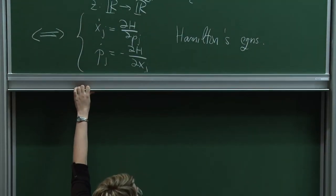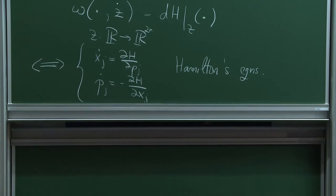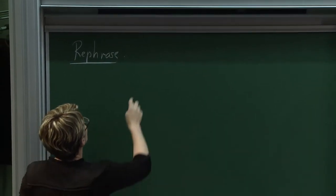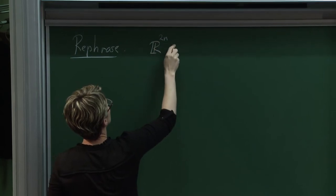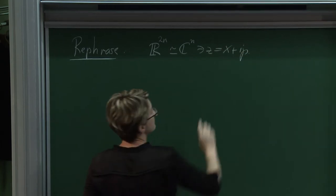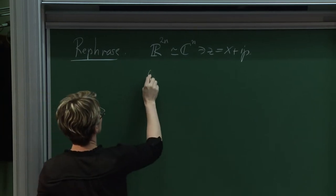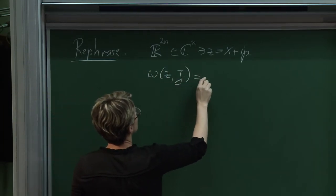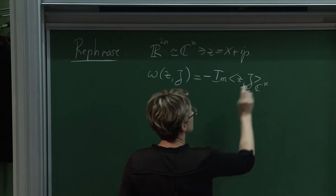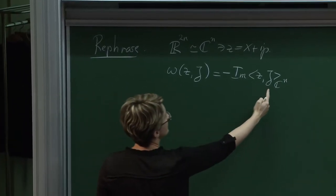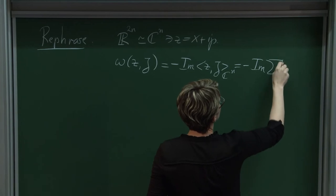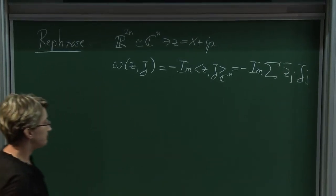One can rephrase the canonical example as follows. We regard R^{2n} as C^n and write z = x + ip. The canonical symplectic form becomes ω(z, ζ) = -Im⟨z, ζ⟩, the negative imaginary part of the inner product in C^n, which is -Im(∑ z̄_j ζ_j), where inner products are C-linear in the second entry as per Dirac's convention.